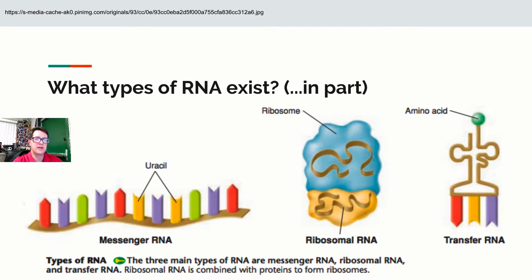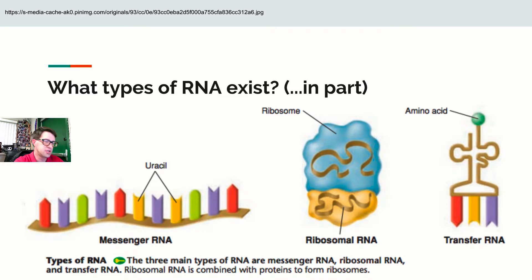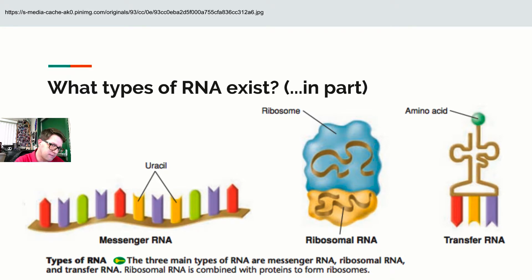Not all RNA makes proteins. Some genes code for messenger RNA that ultimately makes a protein. Some genes code for ribosomal RNA, which helps build the ribosome. Some genes code for tRNA, which transfers amino acids. There are other versions of RNA too, but the key point is: genes make RNA, and some RNA makes proteins.